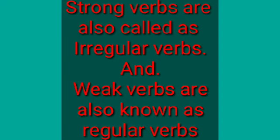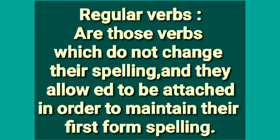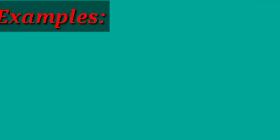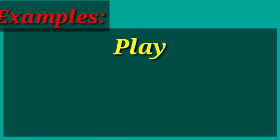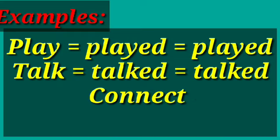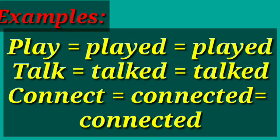Here is an interesting fact: strong verbs are also known as irregular verbs, and weak verbs are also known as regular verbs. Regular verbs are those which form their past tense and past participle by adding 'ed'. Examples of regular verbs are: play, played, played; talk, talked, talked; connect, connected, connected.